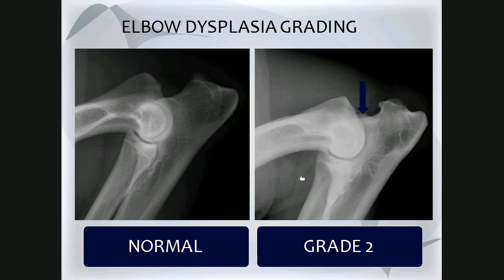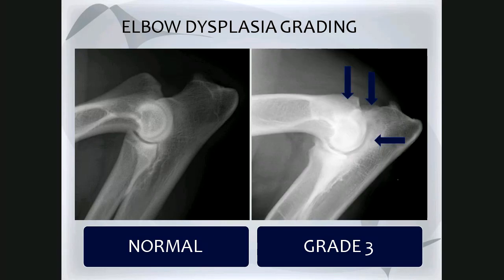In these cases, the cause for elbow dysplasia is not clear — no fragmented medial coronoid process, no ununited anconeal process, and congruency seems adequate — but that doesn't matter. The grading is based on the degree of arthrosis, as arthrosis is abnormal in the elbow. In a more severe example, osteophytes greater than 5 millimeters on the anconeal process, subtrochlear sclerosis, and osteophytes on the cranial proximal radial head are present, again allowing grading based on arthrosis alone.